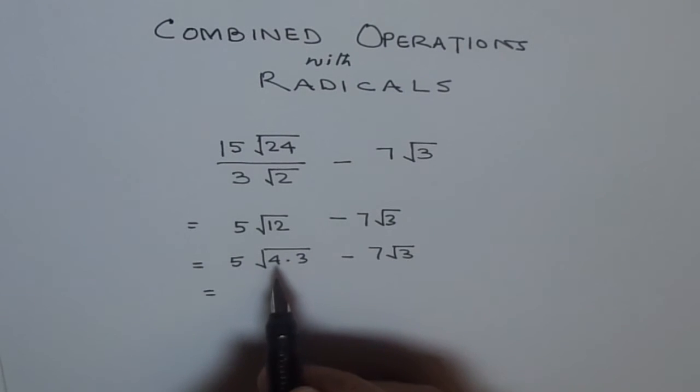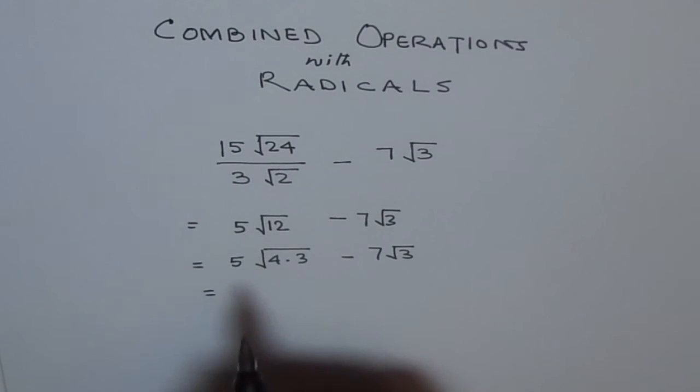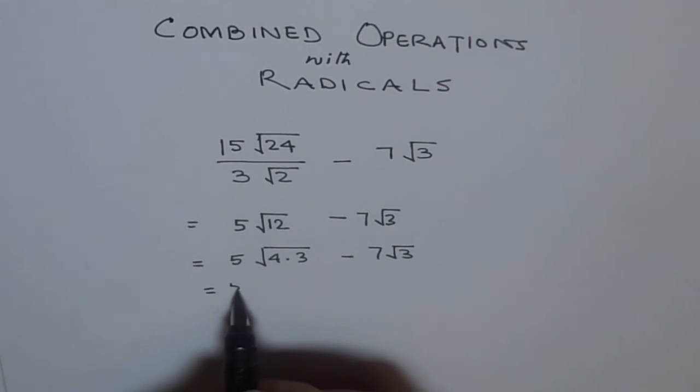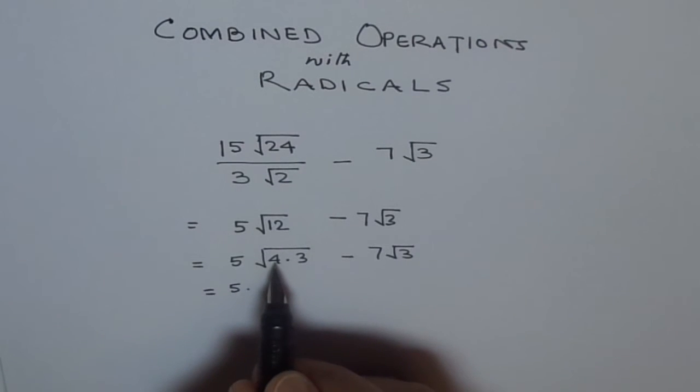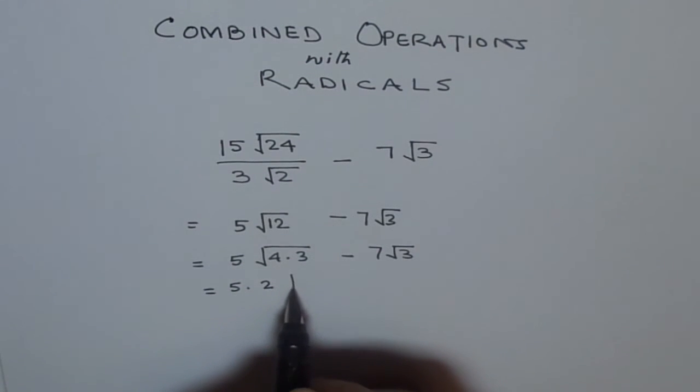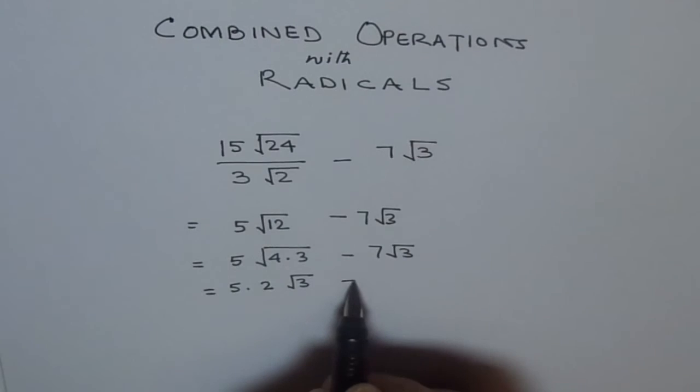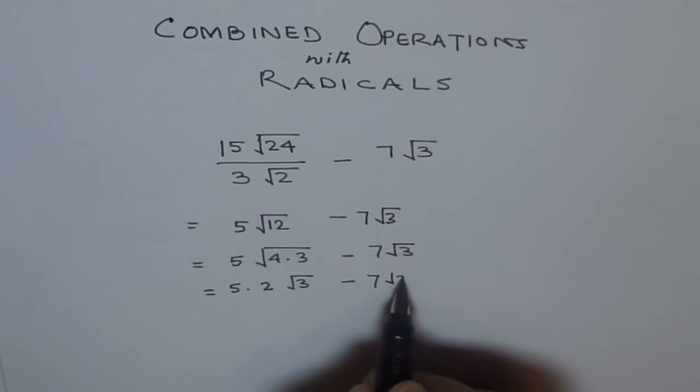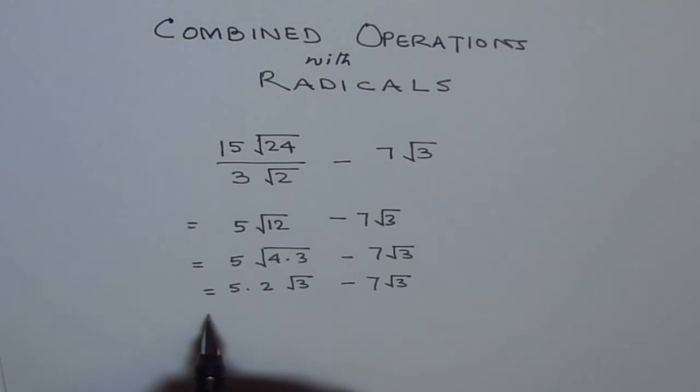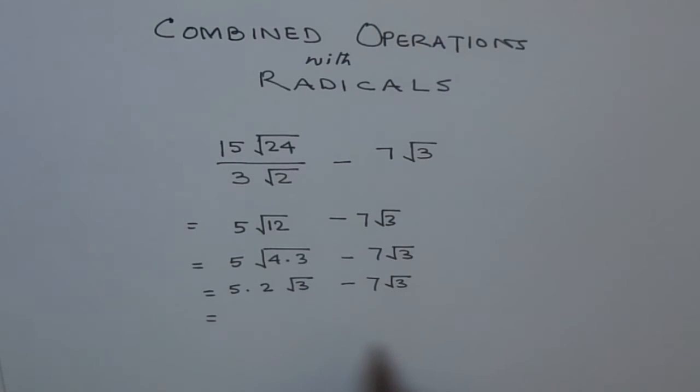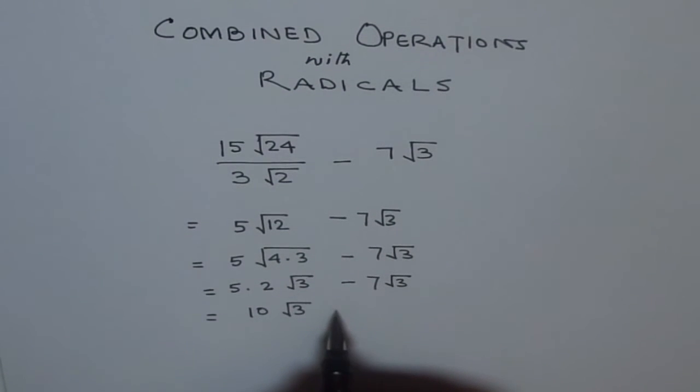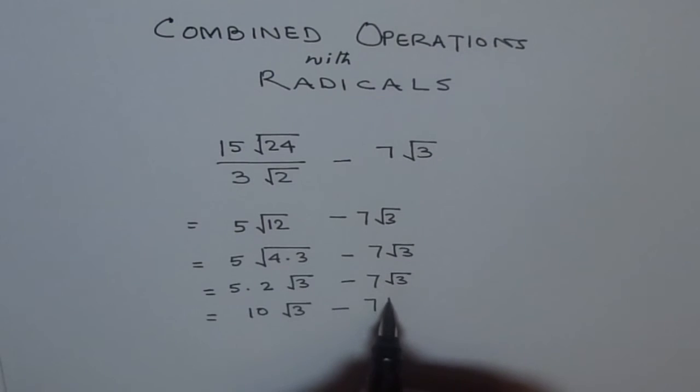Since 4 is a square of 2 we can bring it out of the radical. So we can write this as 5 times 2 square root 3 take away 7 square root 3. I am using the term square root and radical. Square root is the simplest form of radical. Now 5 times 2 is 10. We get 10 radical 3 minus 7 radical 3.